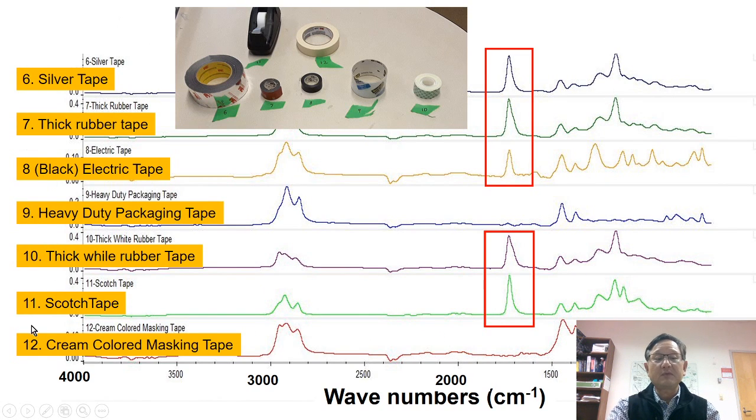If I go to the other samples shown here, IR spectrum was measured as a function of wave numbers, and different wave numbers show the different motions of molecules. We find that at 1,700, samples 6, 7, and 8, which are silver tape, thick rubber tape, and electric tape, have these peaks. Also, the scotch tape and thick white rubber tape show the peak. Whereas, this packing tape and cream-colored masking tape do not show. So they are chemically different from the others.